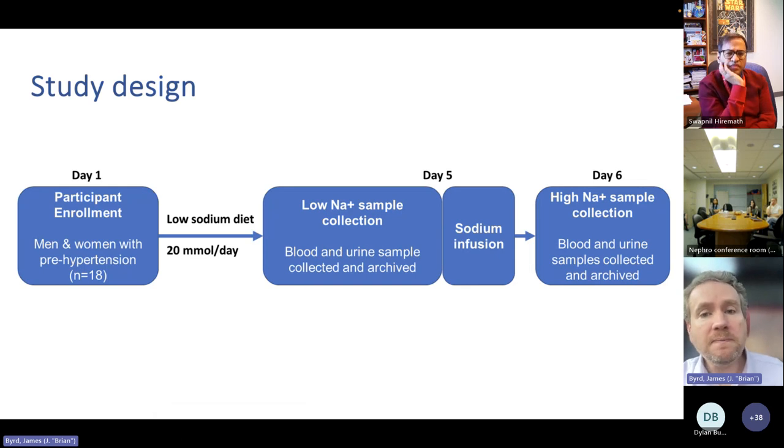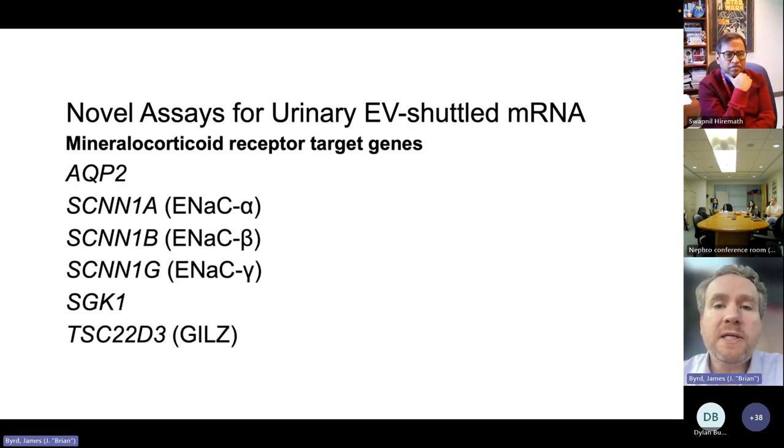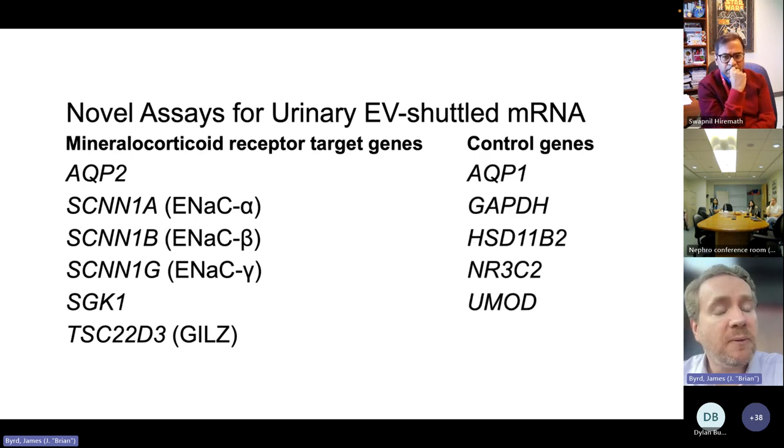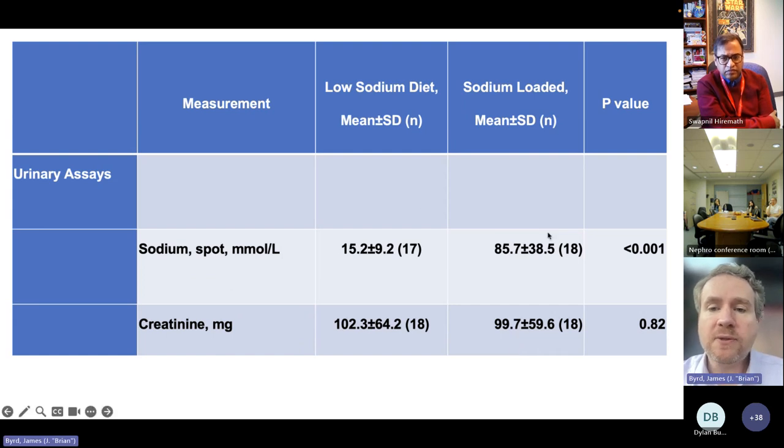I collaborated with Scott Hummel at the University of Michigan. He had asked men and women with prehypertension to consume a low sodium diet of 20 millimoles per day. He collected blood and urine and archived those. Then he infused sodium and asked them to eat a high salty meal and then collected high sodium samples. My lab designed novel assays for urinary EV shuttled target genes of the mineralocorticoid receptor. We also had some control genes that we expected not to change. We found that the salt loading did indeed suppress plasma renin activity as well as serum aldosterone concentration as we expected. After salt loading, the spot urinary sodium was increased and creatinine was not affected.